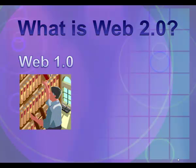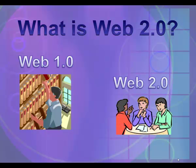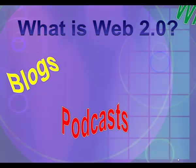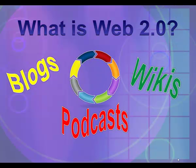Web 1.0 primarily emphasized the delivery of information, like the reference section of a library. Web 2.0 is more like meeting with a study group in the library and using the library's resources — you might even decide to meet with a reference librarian. Some of the most popular Web 2.0 tools are applications like blogs, podcasts, and wikis. All of these tools allow the user to interact with the creator of the tool, and usually with other users as well.